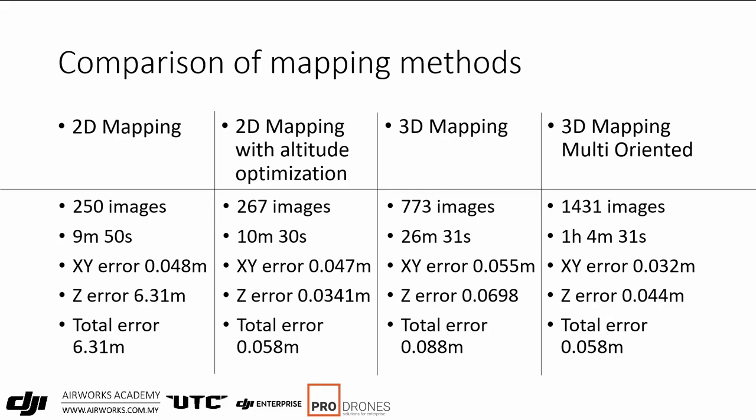3D mapping took 773 images — more than three times as many — and flew for 26 minutes 31 seconds, roughly two and a half times as long. The error was still pretty small at 8–9 centimeters. 3D mapping multi-oriented used 1,431 images and took more than one hour to fly, still achieving roughly 6 centimeters error.